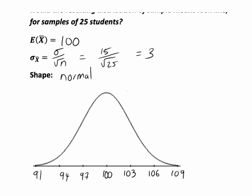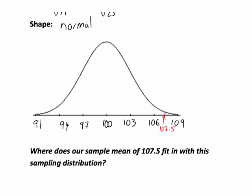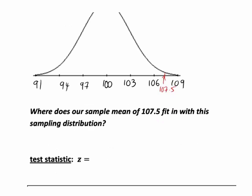The question then becomes: how does our actual sample mean fit in with this distribution of sample means? Our actual sample mean was 107.5, which is midway between 106 and 109 on that diagram, so 107.5 is going to be about there. It looks like it's a fair way away from the center of the distribution of sample means that we would have if H0 was true.